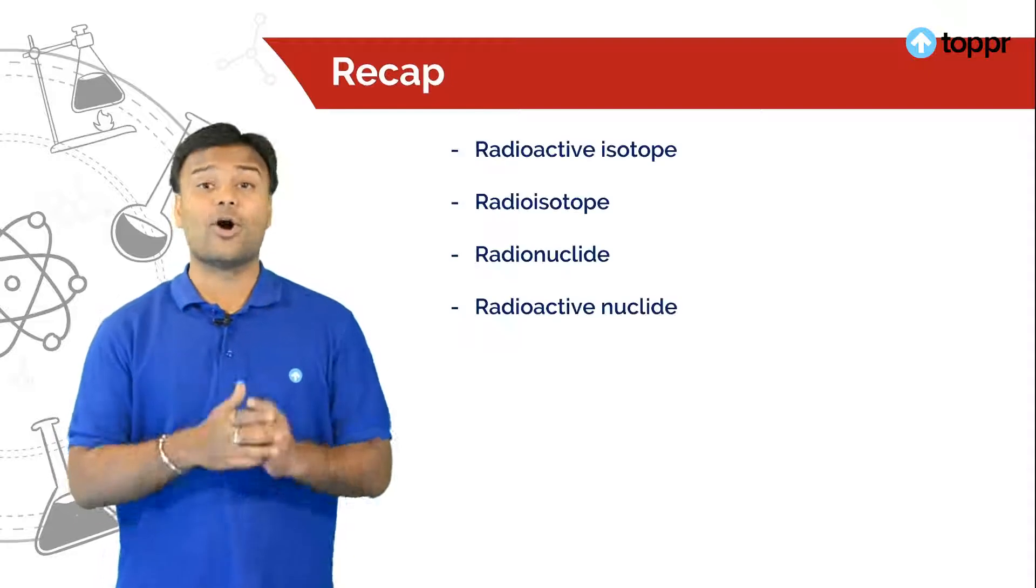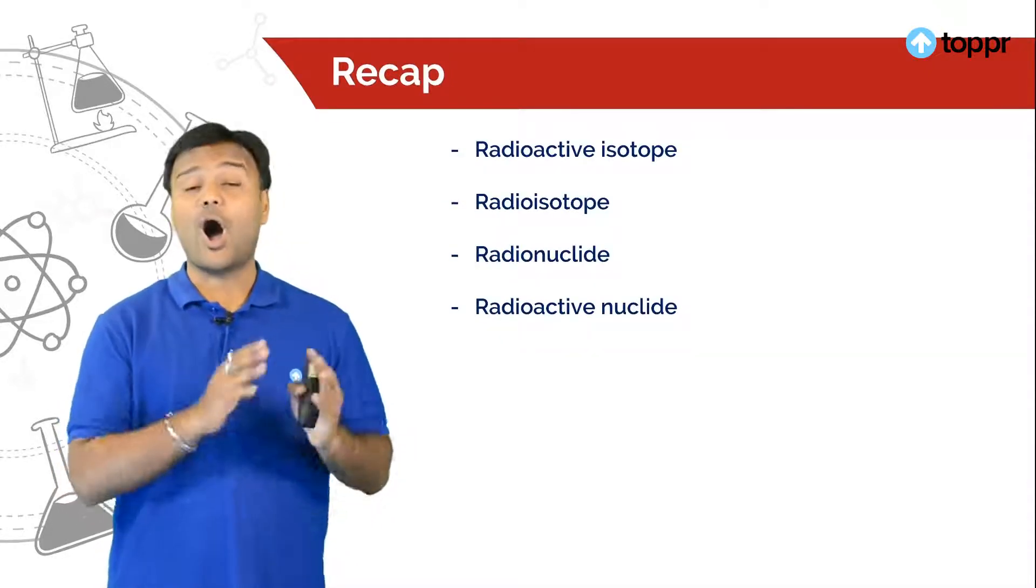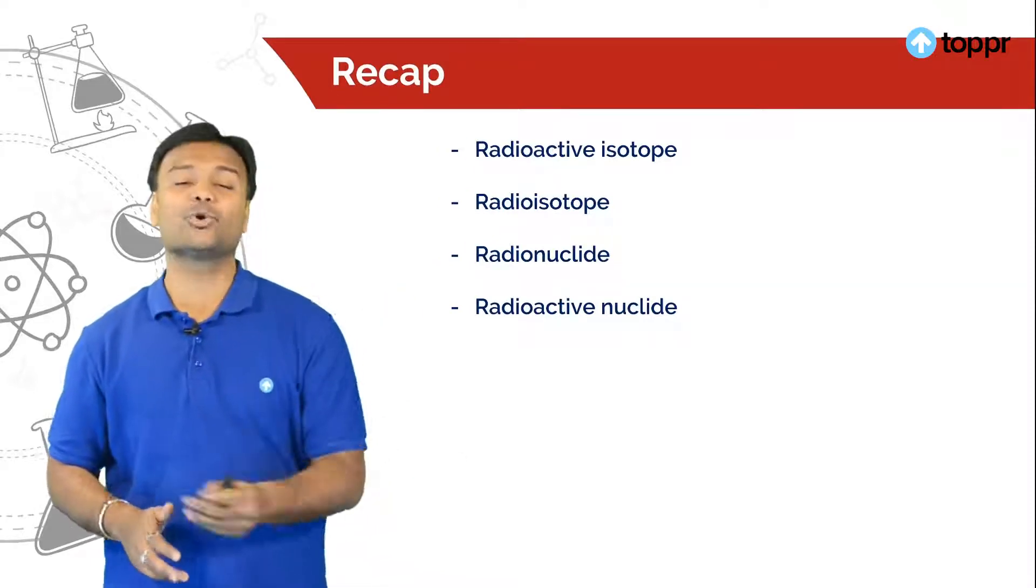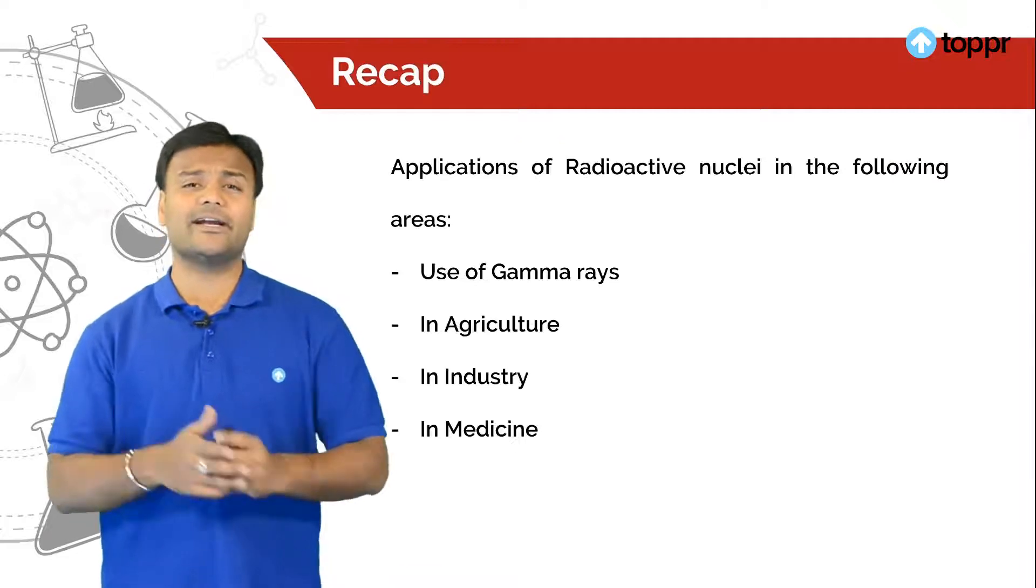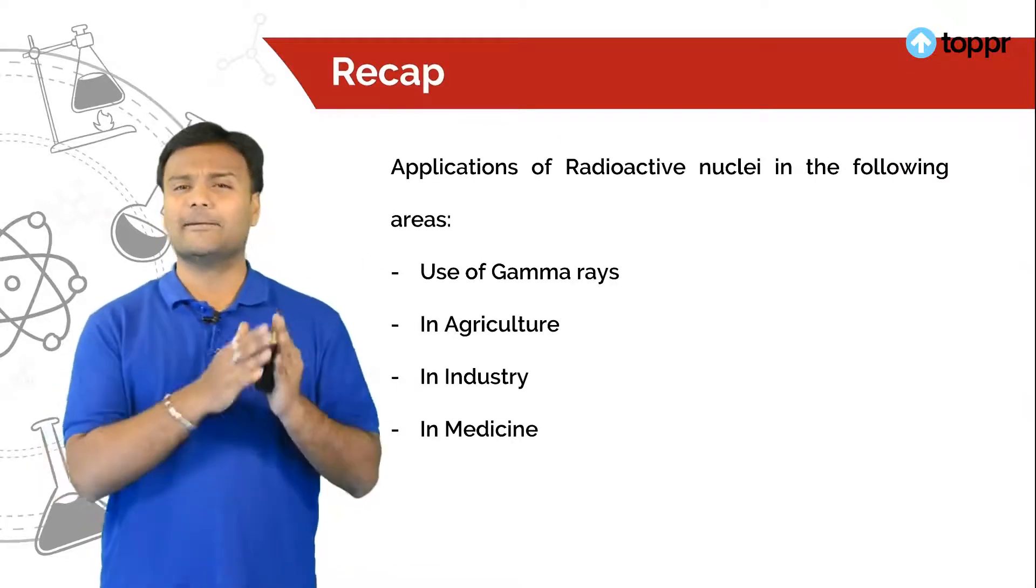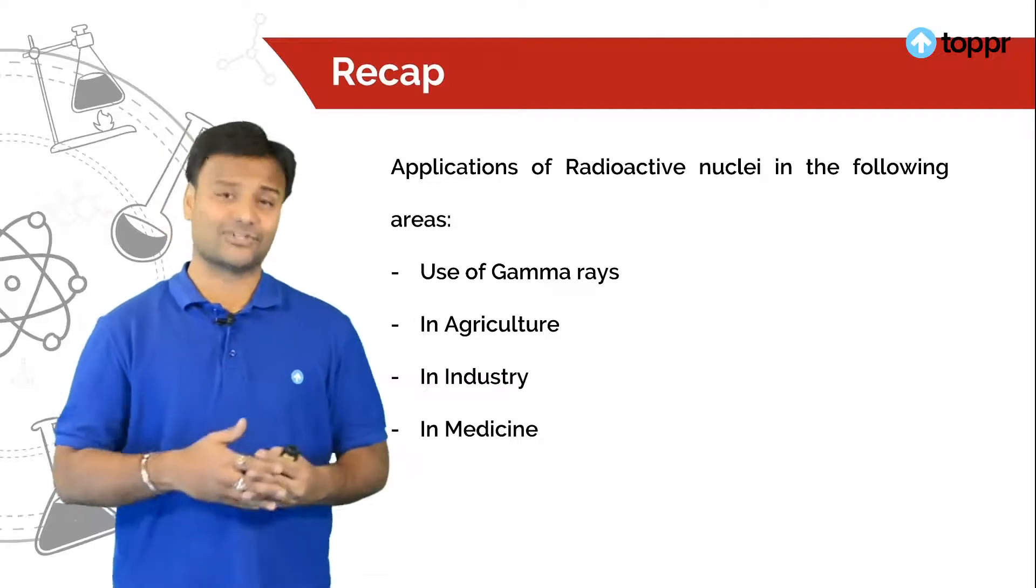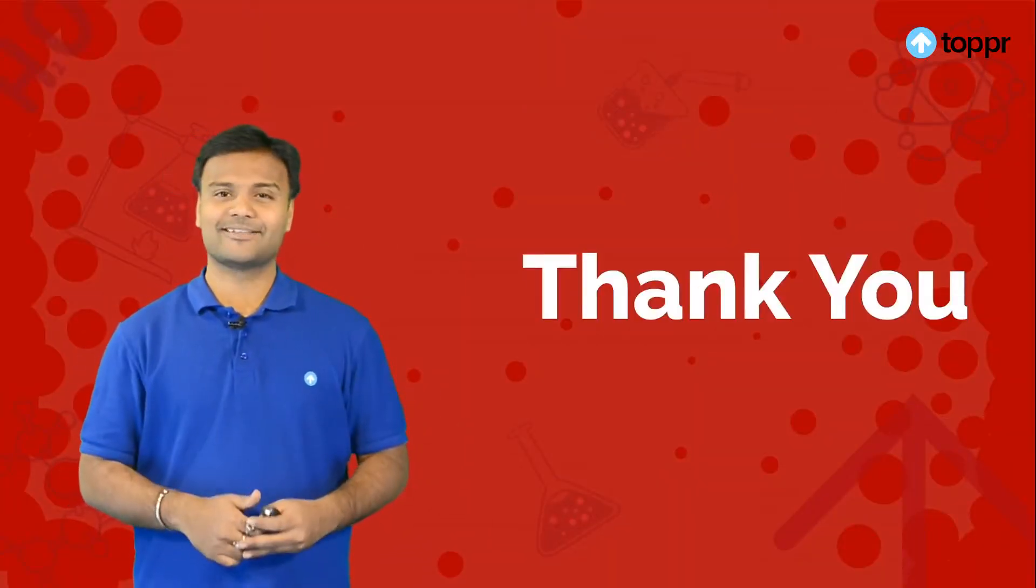And those isotopes are called as radioactive isotopes. These radioactive isotopes are also called as radioisotope, radionuclei or radioactive nuclei. And we have seen various applications of these radioactive isotopes, especially the use of gamma rays in medicine, in agriculture, in industries. That's all about this video guys. Stay tuned to Topper. Thank you. Bye.